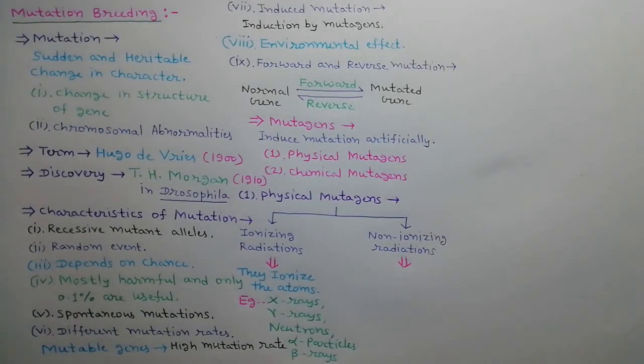Ionizing radiations ionize the atoms into anions or cations, such as X-rays, gamma rays, neutrons, alpha particles, and beta rays.